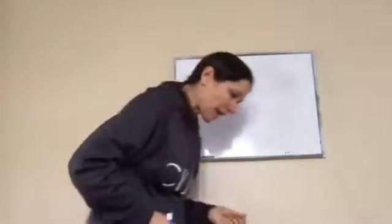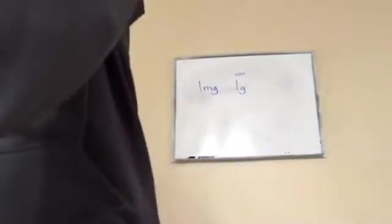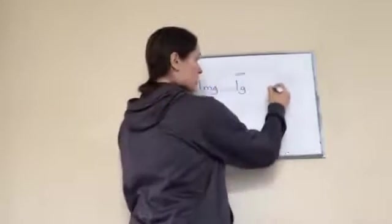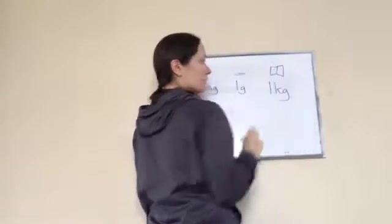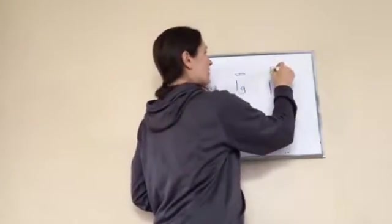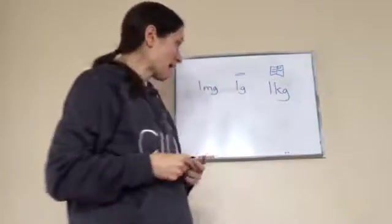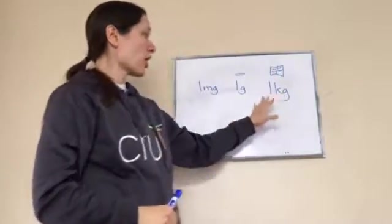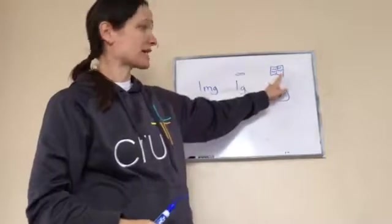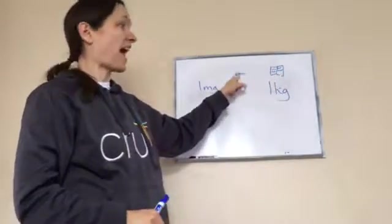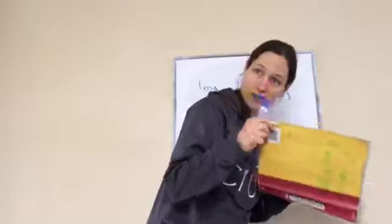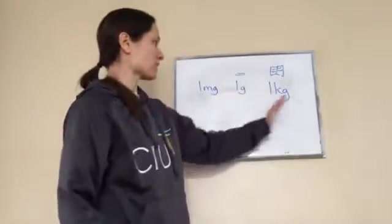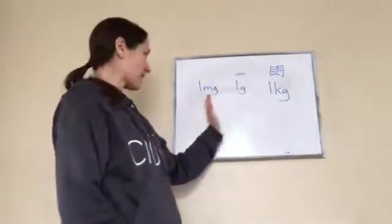This math book weighs one kilogram. So how many paper clips would I need to equal the book? A thousand paper clips will weigh the same as this book. It takes a thousand of this to equal this, a thousand of this to equal this — about a thousand in between each unit.